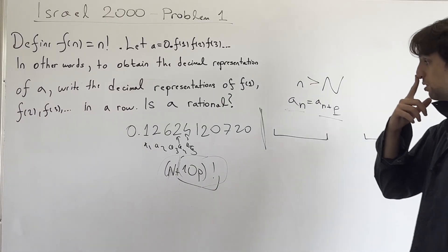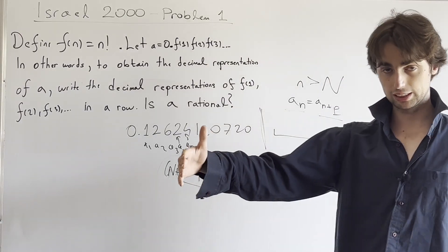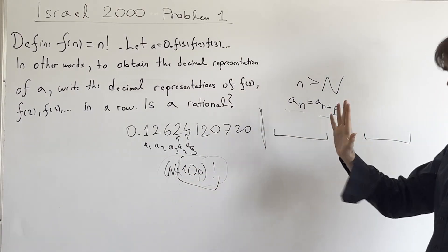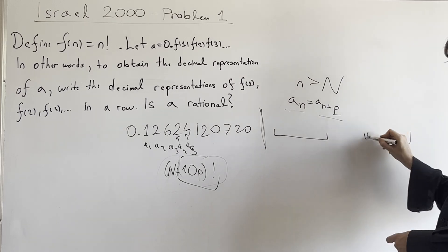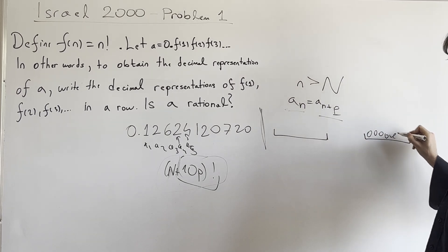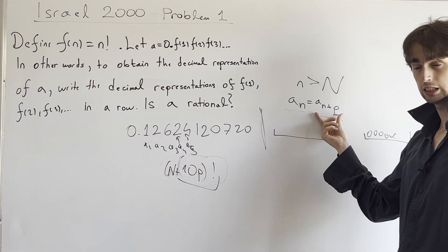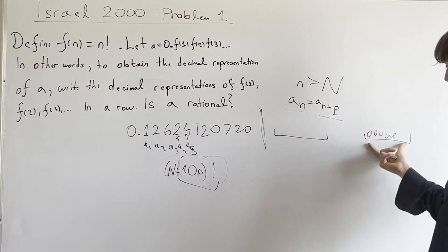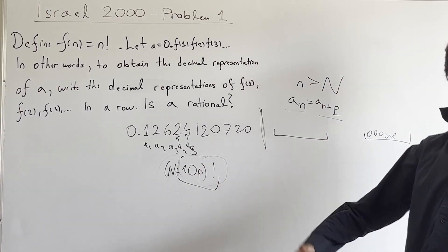And then we would have a sequence of P digits that are all zeros. P consecutive digits that are all zeros, actually. Which means that this period, if such P exists, we'd have that we'd have only zeros starting from some N. But that's absurd.